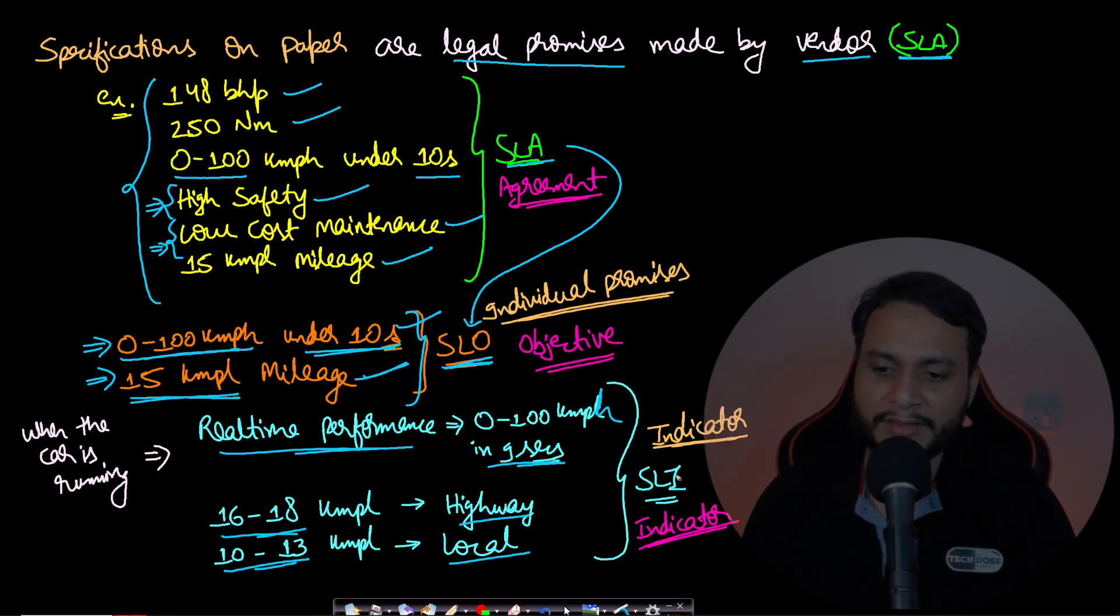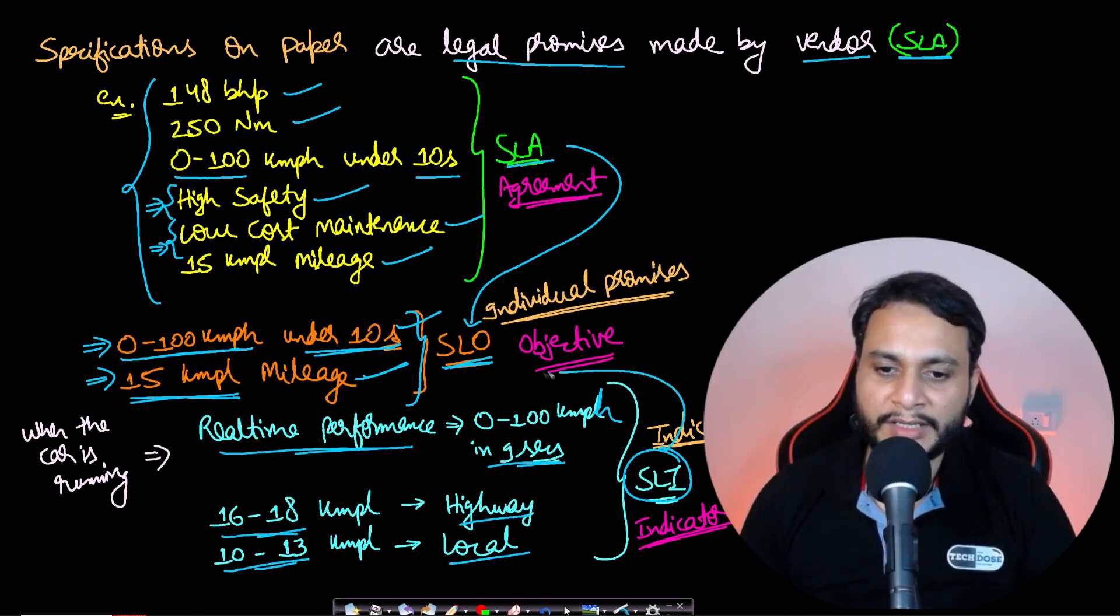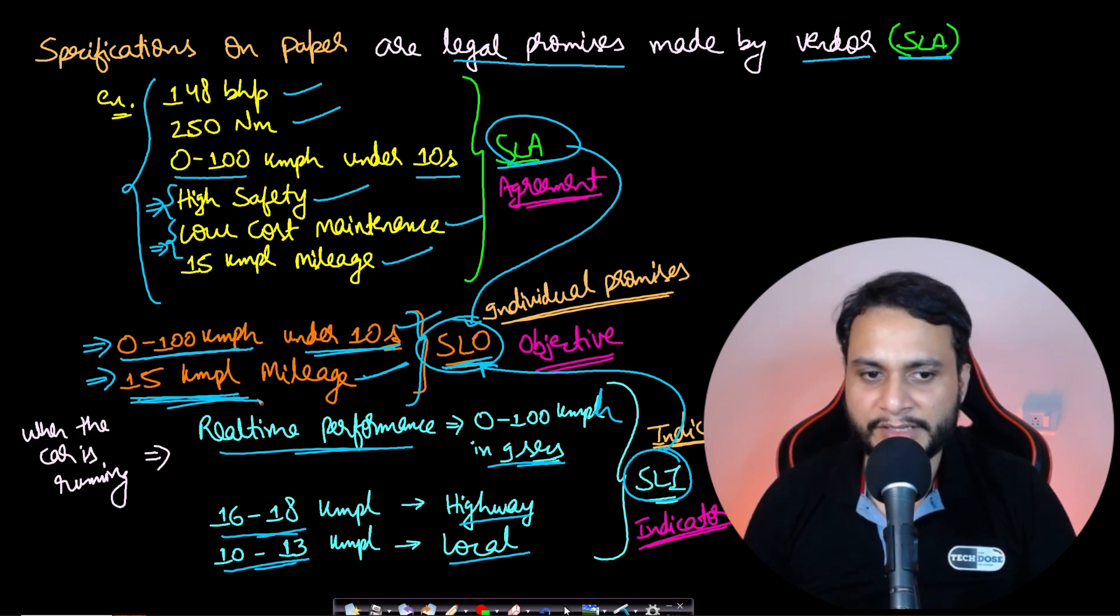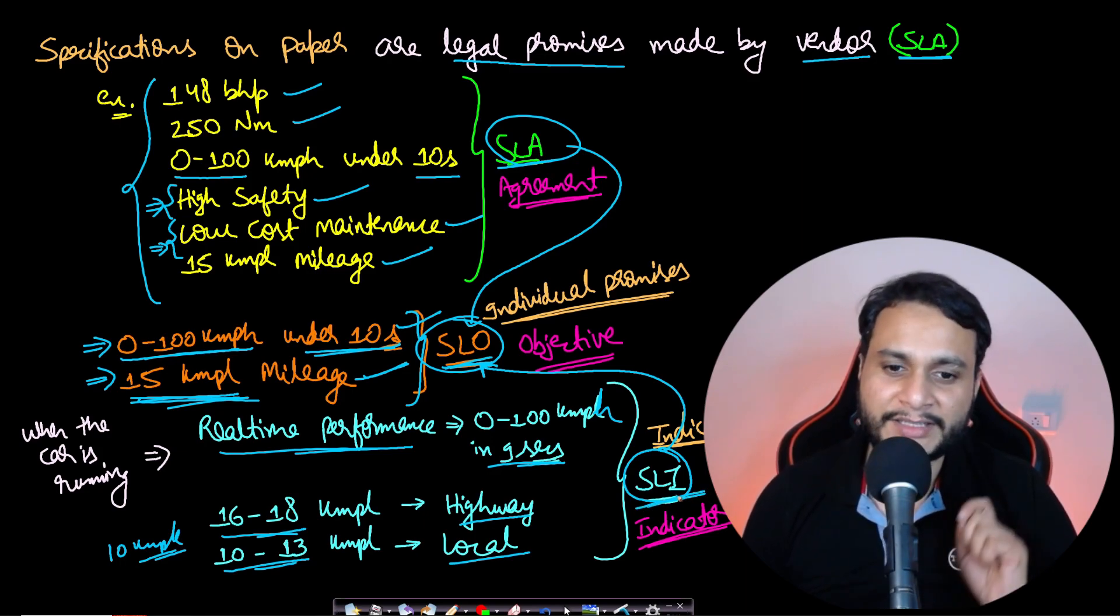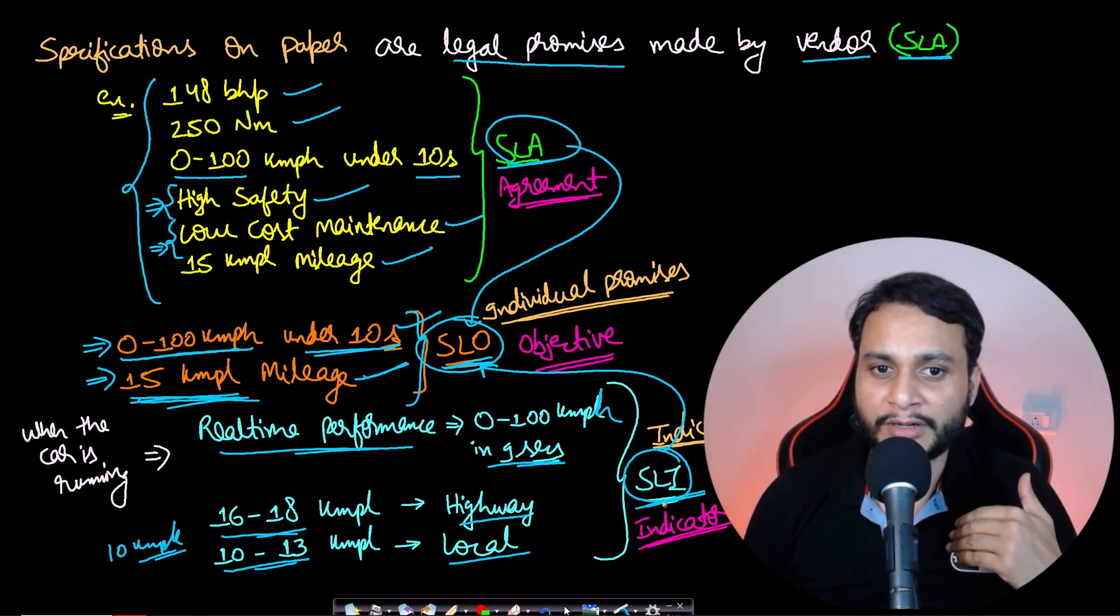These are the actual indicators. This is the real-time performance. These SLIs, which is the service level indicator, is actually showcasing about how much it is in compliance with the agreement which was made - how much is it in compliance with the SLOs as well. So if the SLO mentioned that 15 kmpl is the mileage and you are just getting 10 kmpl, then it is not compliant as per the agreement, as per the promises. Therefore, SLIs are acting as an indicator of how much compliant you are.